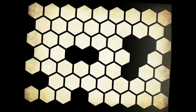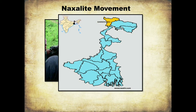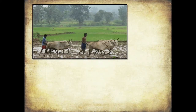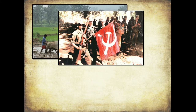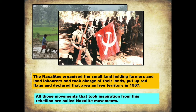Let us now discuss the Naxalite movement. This movement started at Naxalbari in the Darjeeling district of West Bengal. The Naxalites organized small land-holding farmers and land laborers, took charge of their land, put up red flags, and declared those areas as free territory in 1967. All movements that took inspiration from this rebellion are called the Naxalite movement.